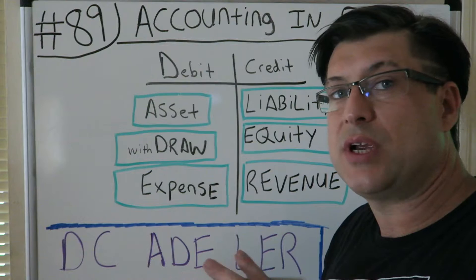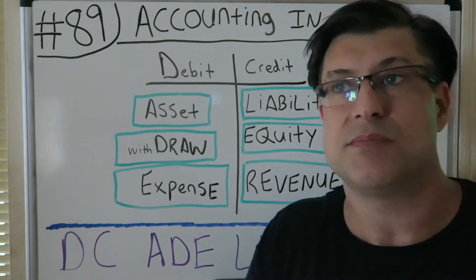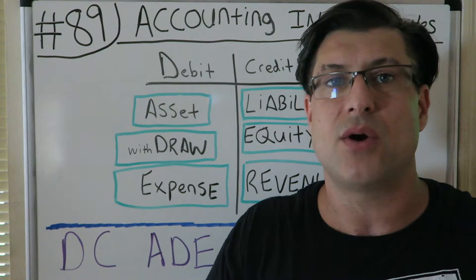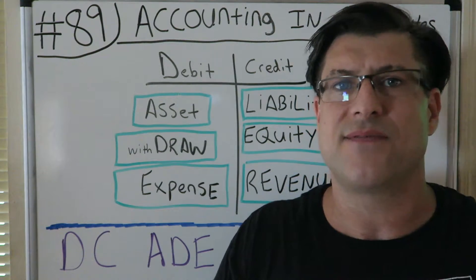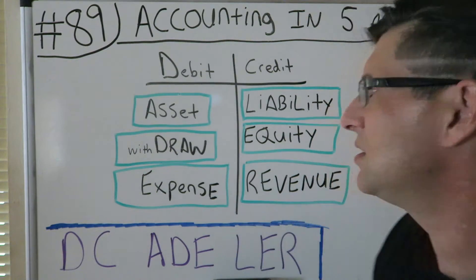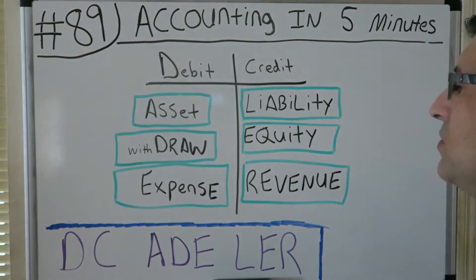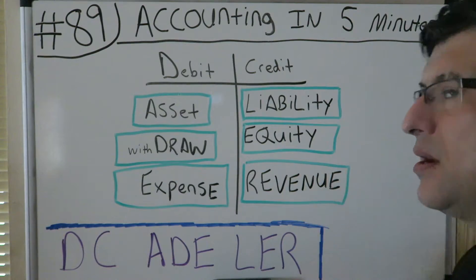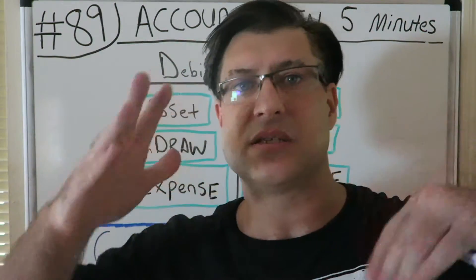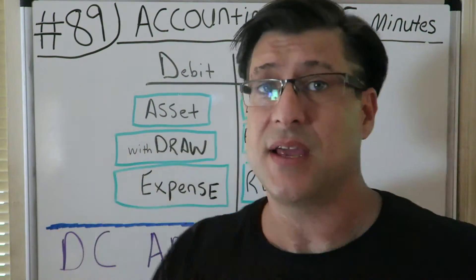This is a double-entry accounting system, as made by Luca Pacioli in the late 1400s. The double-entry accounting system means it's a balancing system — it balances. The balance sheet is the very biggest thing in accounting.